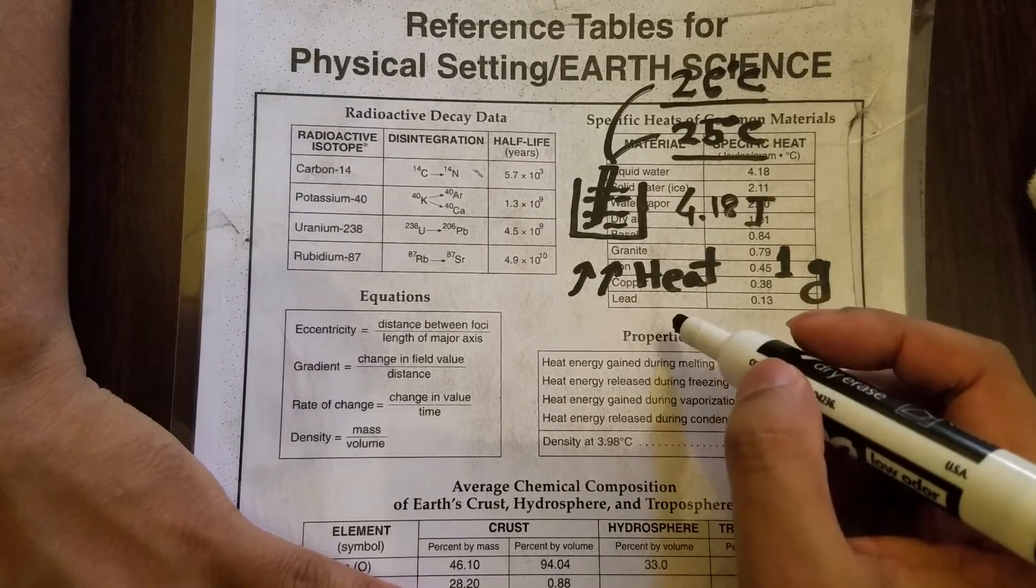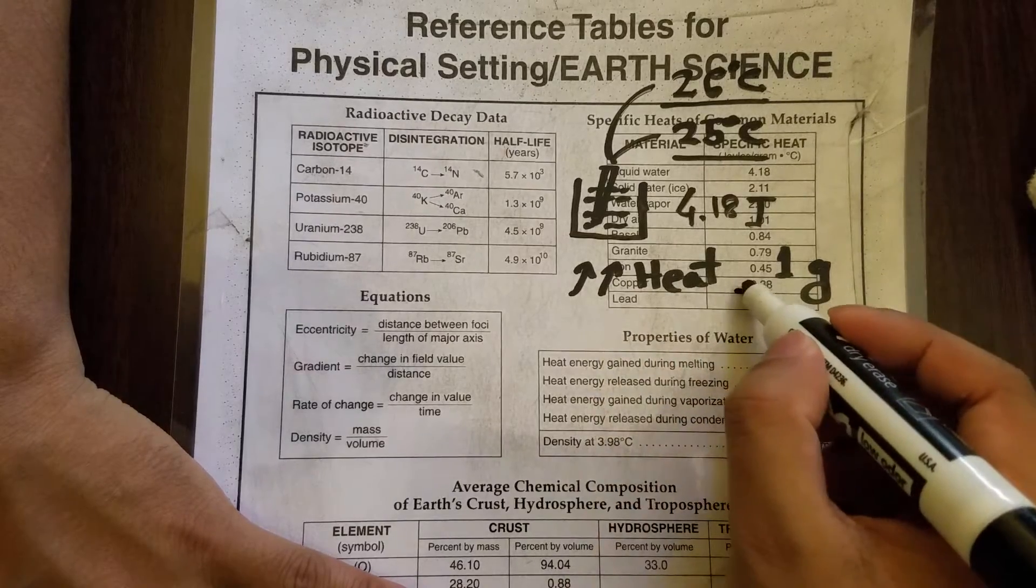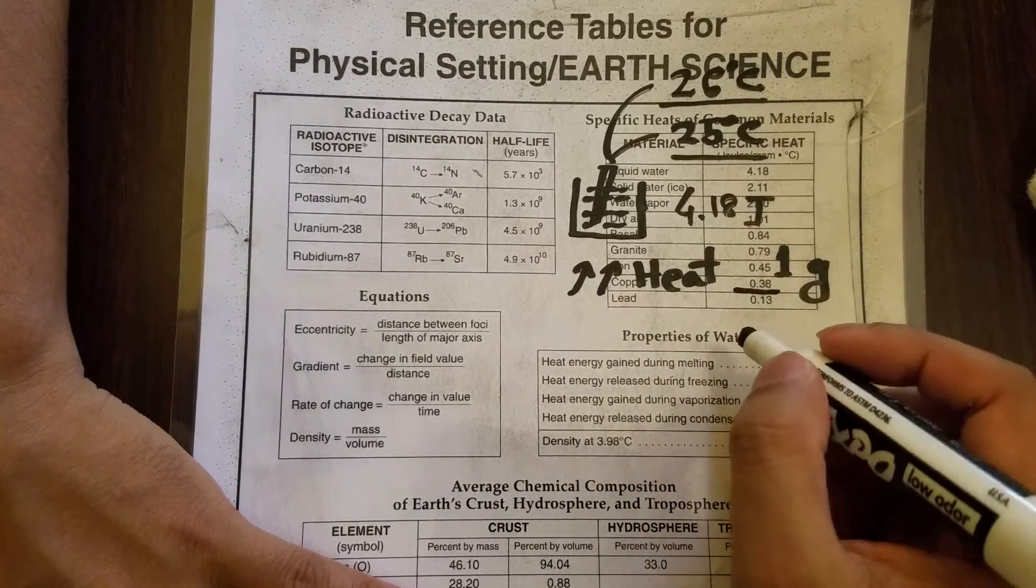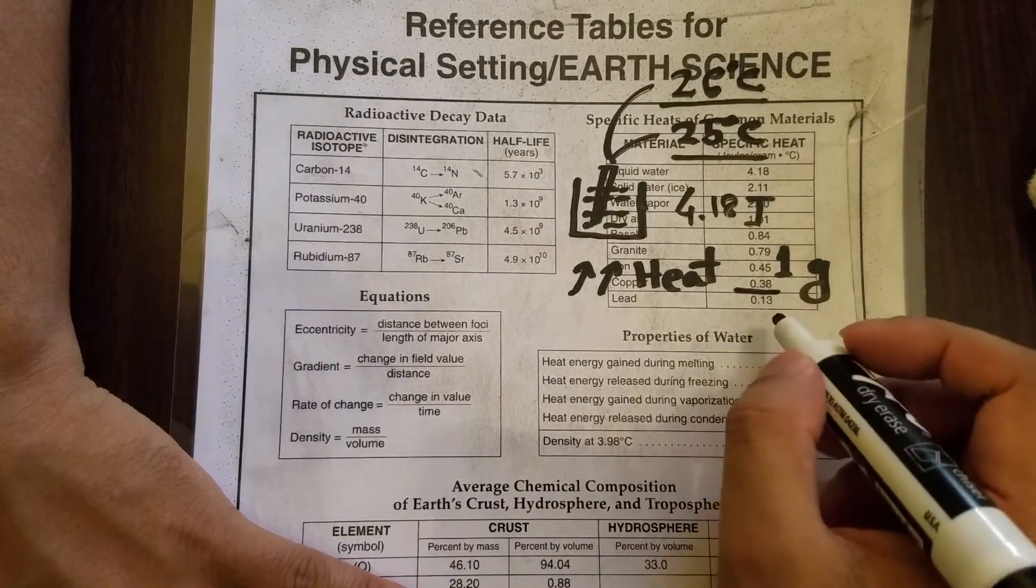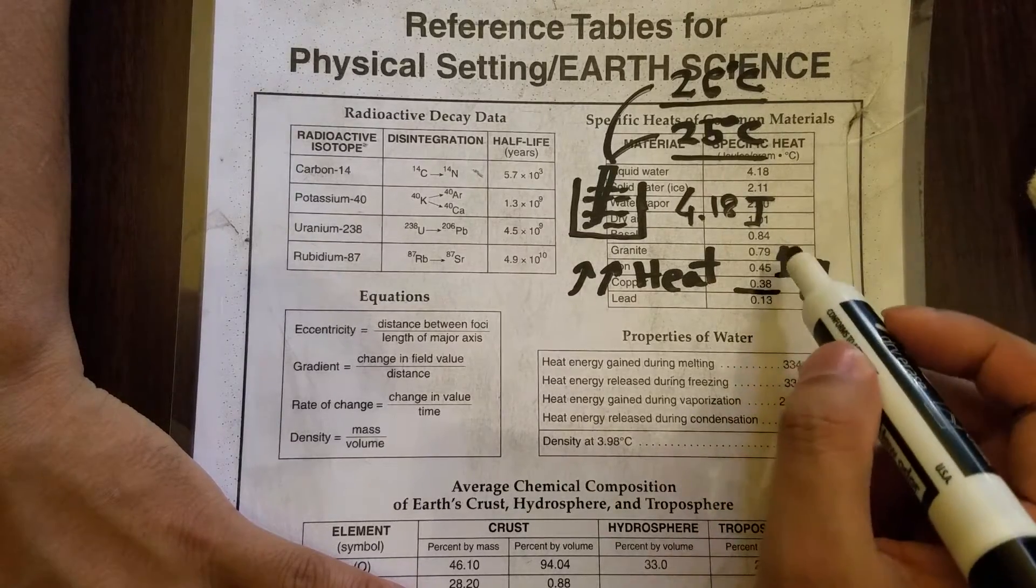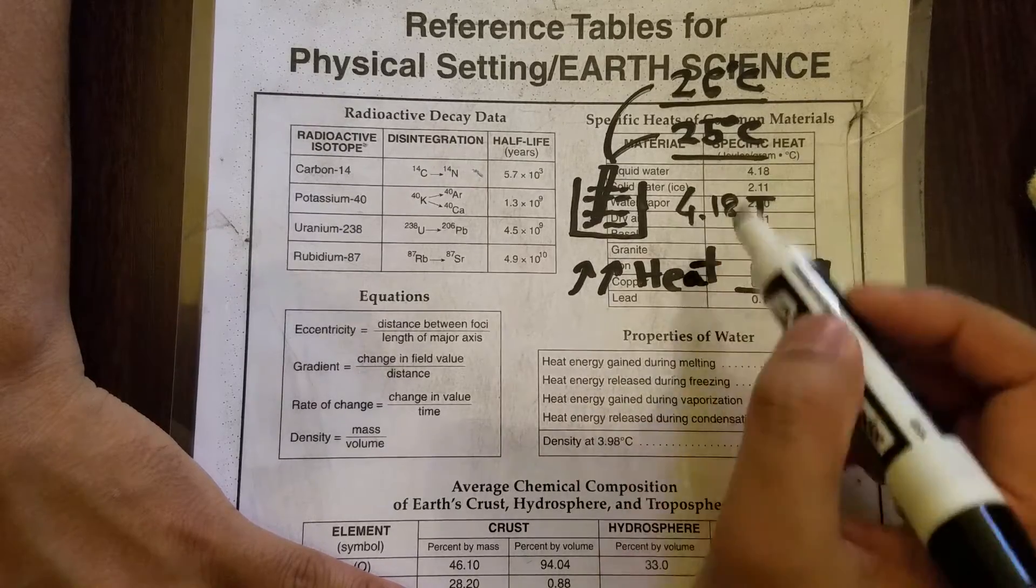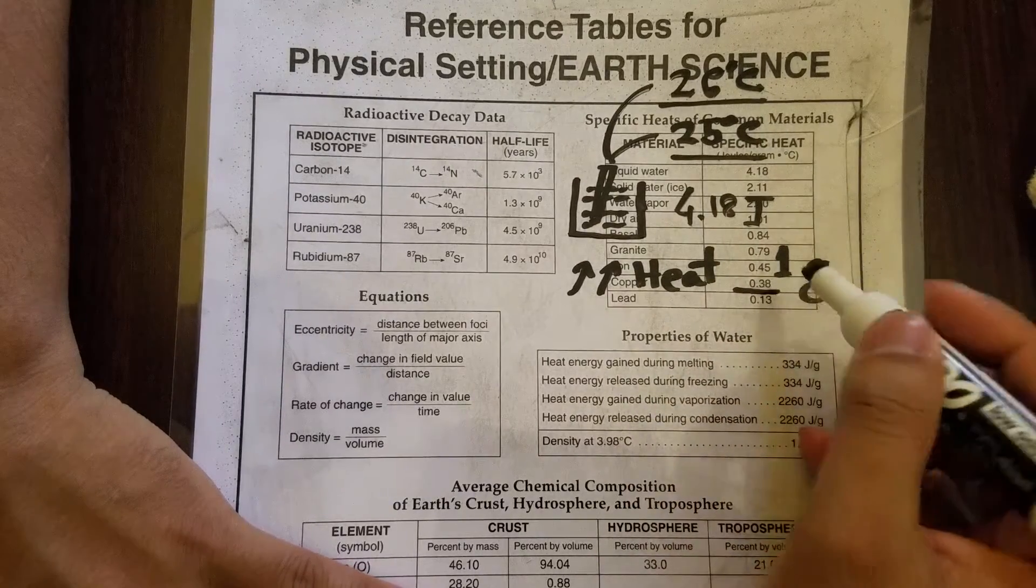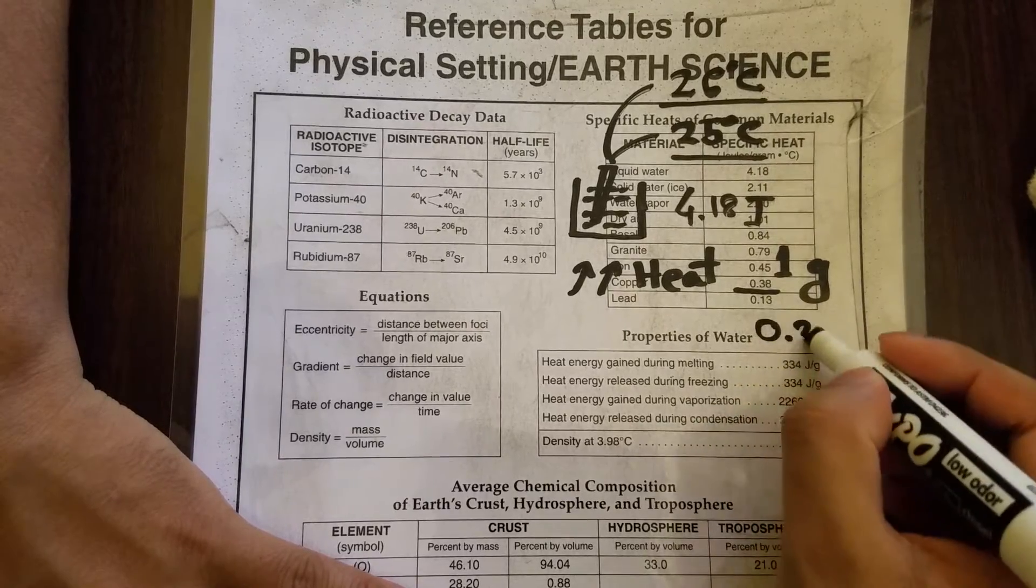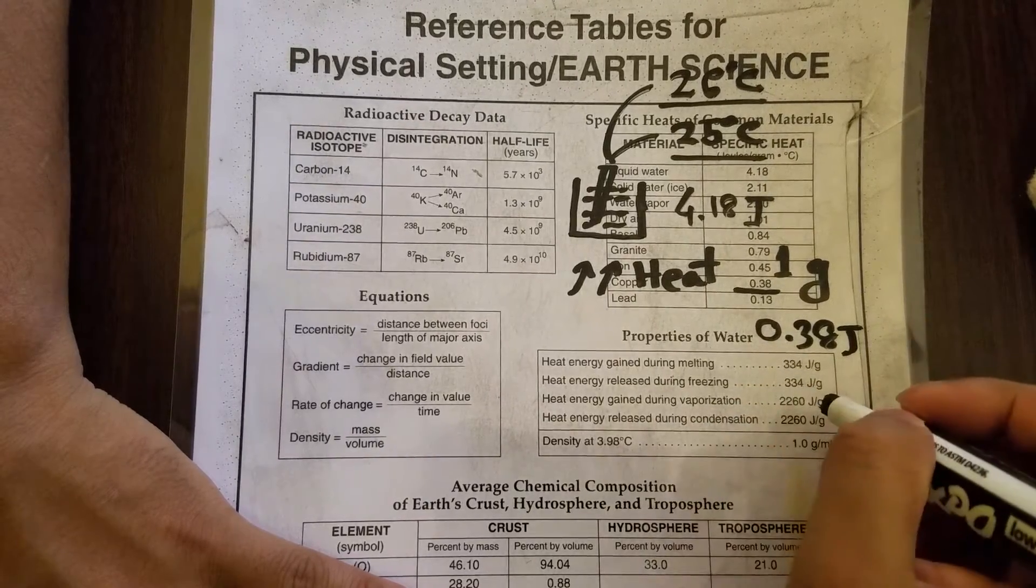Now if you look at some other material, for example copper, you'll see this is only 0.38. So that means if you have copper and you want to raise the temperature from 25 degrees to 26 degrees, in that case you need to apply 0.38 joules. So that's the difference.